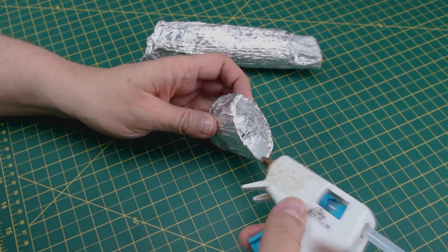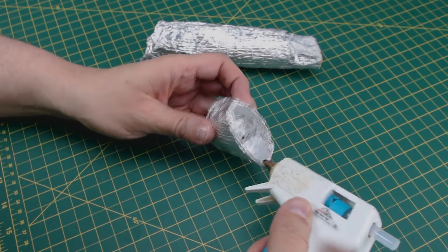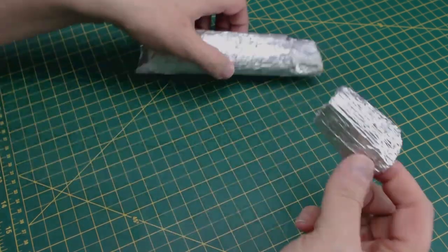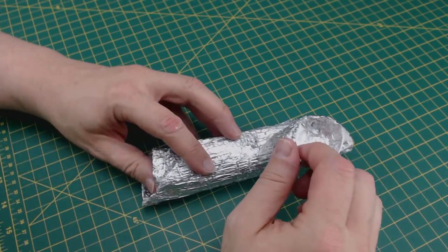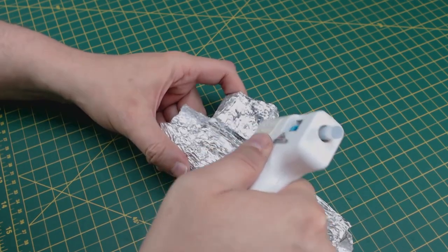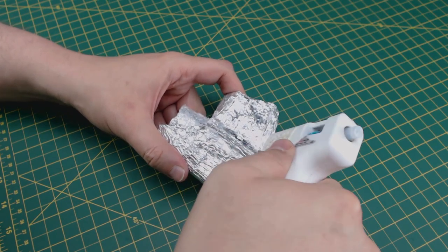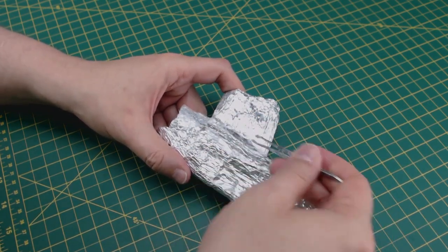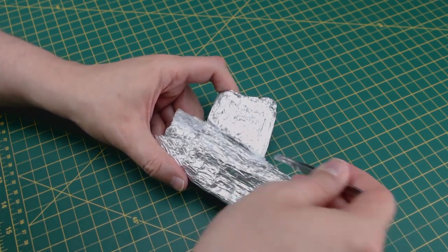And with our trusty glue gun, we can attach the two pieces together. You're going to want to double check to make sure that these parts are secure. Then I'll fill in the gaps with the hot glue, and add some texture while the glue is still warm. Wait a few seconds before adding the texture so the glue doesn't actually grab at the tweezers.